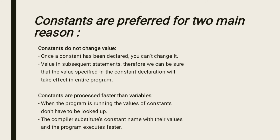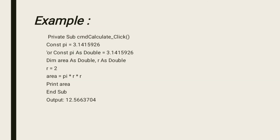Constants are preferred for two main reasons. First, constants do not change value. Once a constant has been declared, you can't change its value in subsequent statements. Therefore, we can be sure that the value specified in the constant declaration will take effect in the entire program. Second, constants are processed faster than variables. When the program is running, the values of constants don't have to be looked up. The compiler substitutes the constant name with their values and the program executes faster.